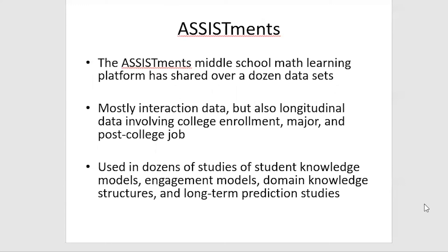Another big source of open data is ASSISTments — the ASSISTments middle school math learning platform has shared over a dozen datasets, mostly interaction data but also longitudinal data involving college enrollment, college major, and post-college job. It's been used in dozens of studies, including long-term prediction studies looking at what aspects of a student's engagement, behavior, and learning at age 13 predicts where they are at age 22.